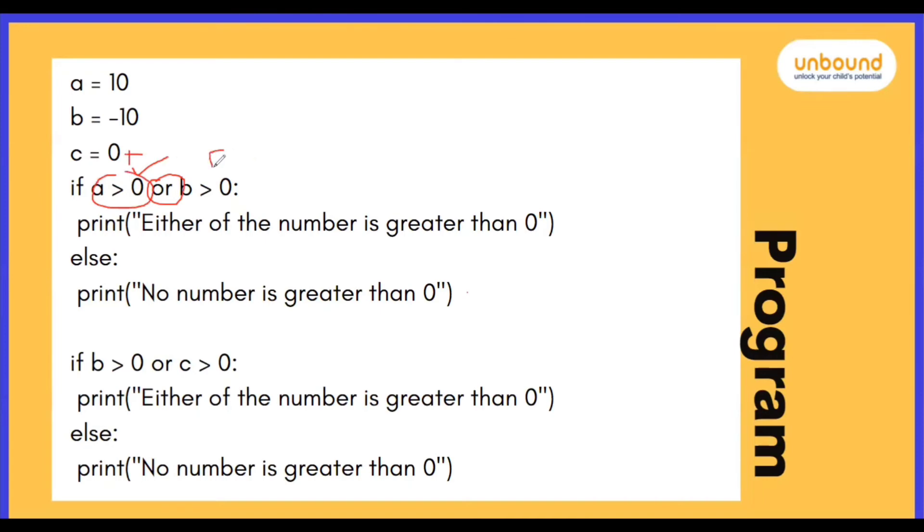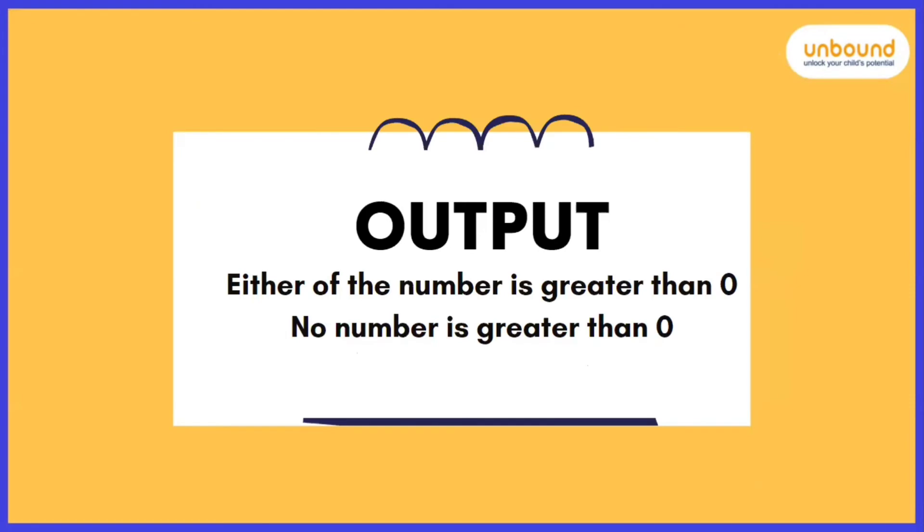So if you need a true output, you just need only one condition true and which we have. Here the compiler will give either of the numbers is greater than 0. Both the conditions are false, it will give false. So our output we got is correct.